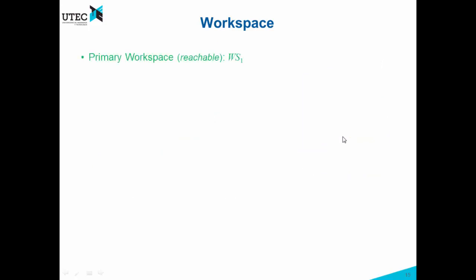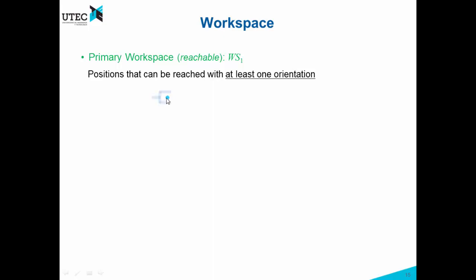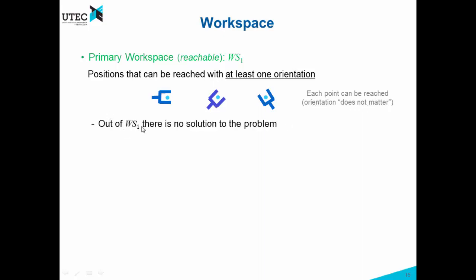The primary workspace is called the reachable workspace, represented by WS1. It consists of positions that can be reached with at least one orientation. For example, if I have a point and I can reach it with at least one orientation, I'm inside this workspace. Maybe I cannot reach a point with one particular orientation, but if I can reach it with another orientation, that's okay — at least one orientation is needed. If we are out of the primary workspace there is no solution, but for all points inside this workspace, if we use a proper orientation, there exists at least one solution.